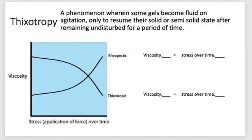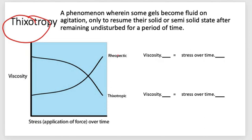We also have the term thixotropy. Thixotropy is a phenomenon wherein some gels become fluid on agitation, only to resume their solid or semi-solid state after remaining undisturbed for a period of time. It is basically a reversible behavior of certain gels that liquefy when they are shaken, stirred, or otherwise disturbed, and they reset after being allowed to stand.